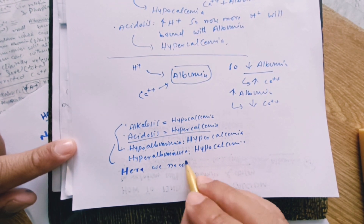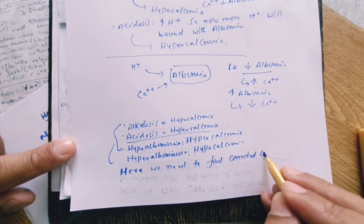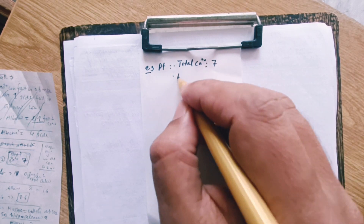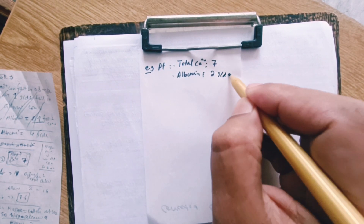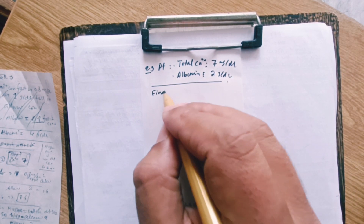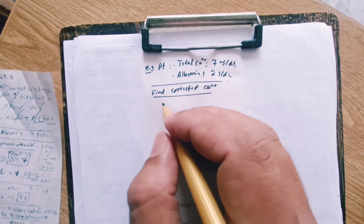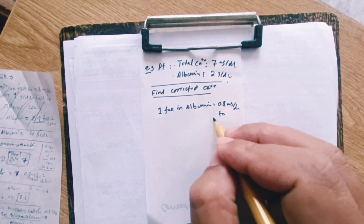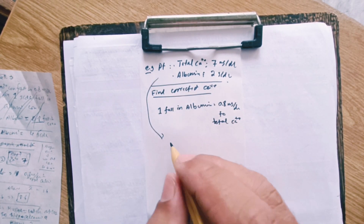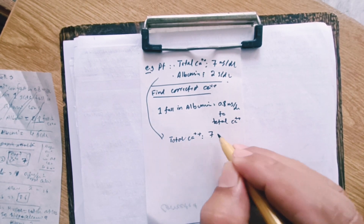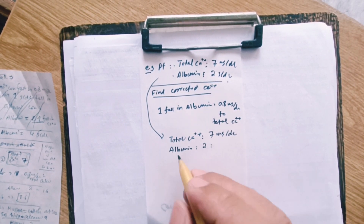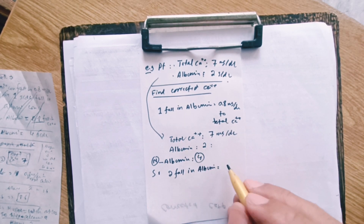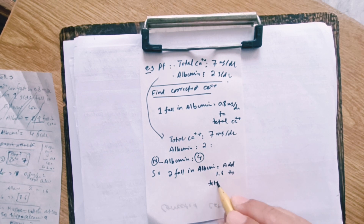For any condition that causes these changes, we need to find the corrected calcium level. For example, a patient has a total calcium of 7 mg/dL with an albumin of 2 g/dL. The normal albumin level is 4 g/dL. Remember: for one fall in albumin, we need to add 0.8 mg/dL of calcium to total calcium. Here, there is a drop of 2 in albumin, so we add 1.6 mg/dL to total calcium.